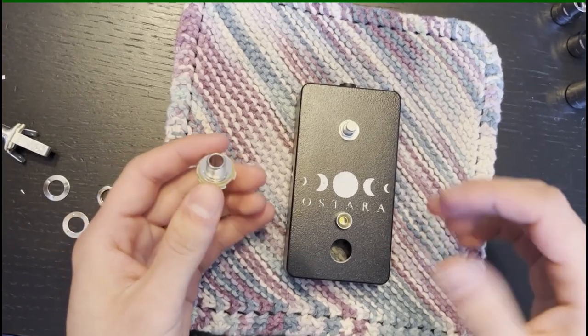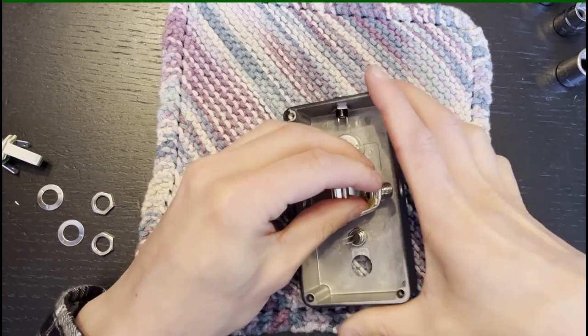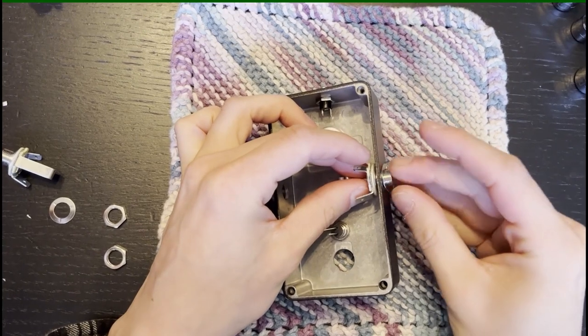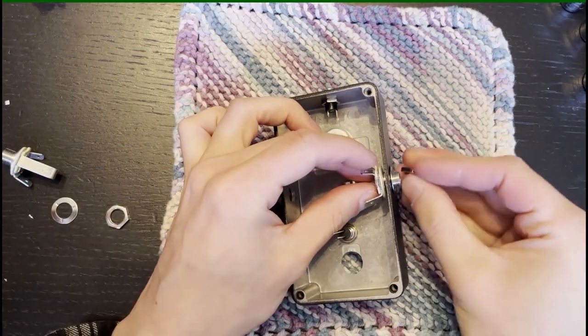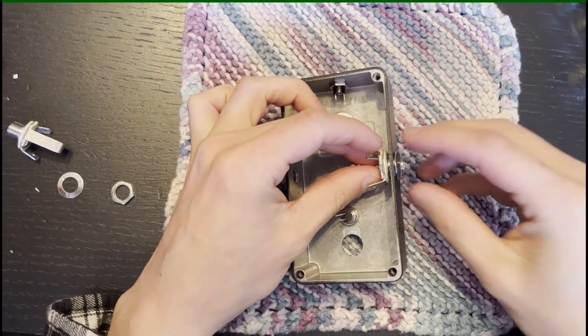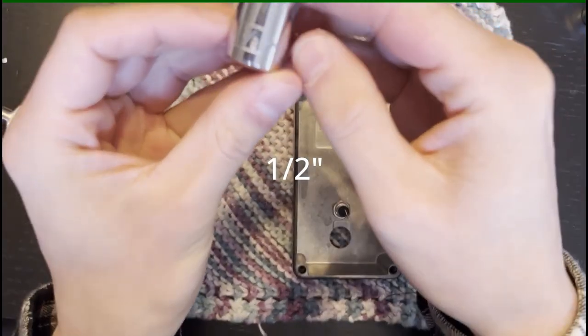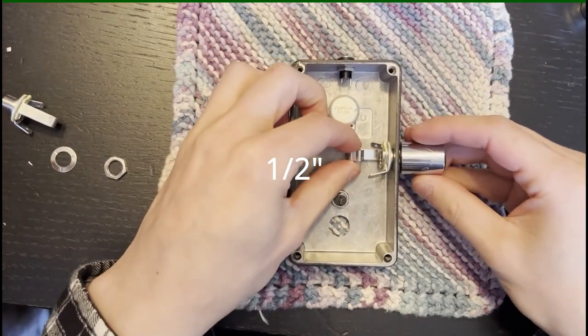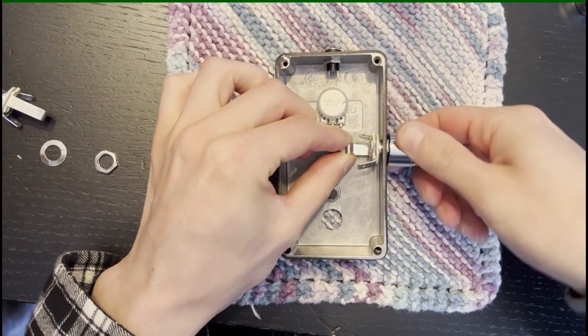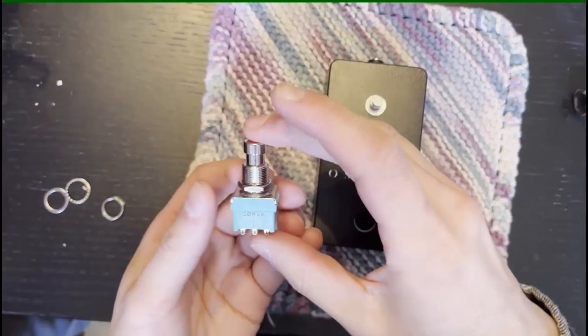Now the input and output jacks. This is the output jack. It doesn't matter which one, they're about the same. The little tongue thing that the tip will connect to, just make that go sort of towards the bottom or towards the front of the enclosure. We're going to use the 1/2 inch socket to tighten this up.